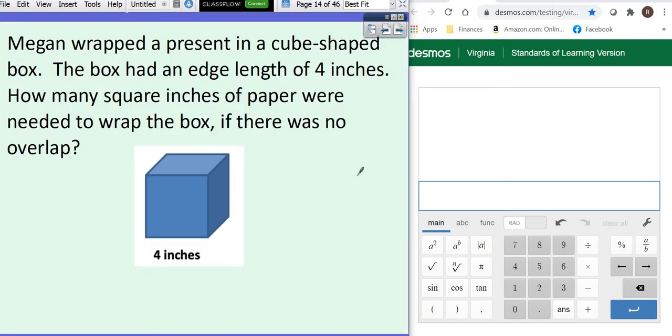The first example here says Megan wrapped a present in a cube-shaped box. First things first, if they ever give you a cube, that means all the measurements are exactly the same. The box had an edge length of four. How many square inches of paper were needed to wrap the box if there was no overlap? So you know we're looking for surface area of a cube, which is the same thing as the surface area of a rectangular prism.